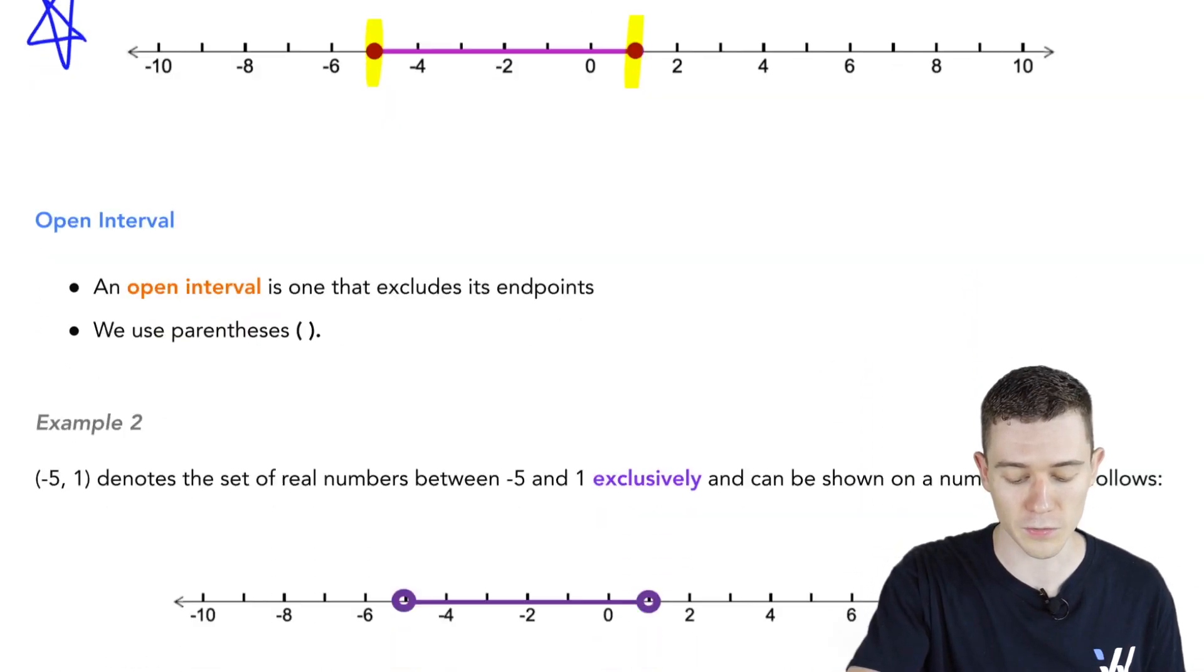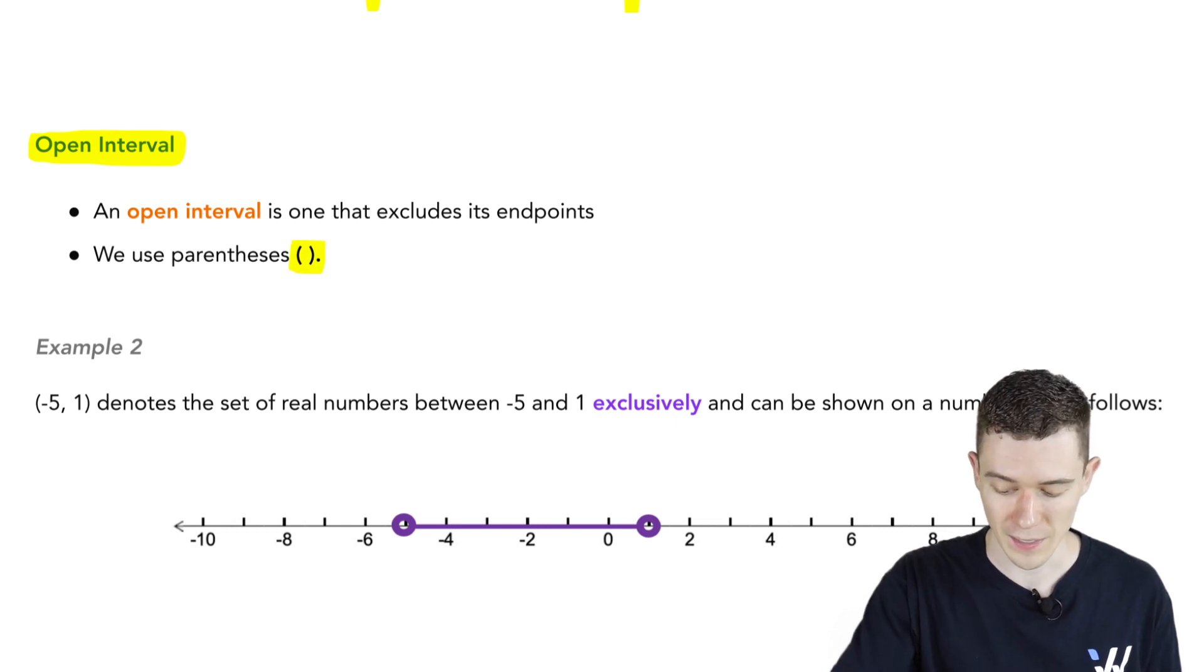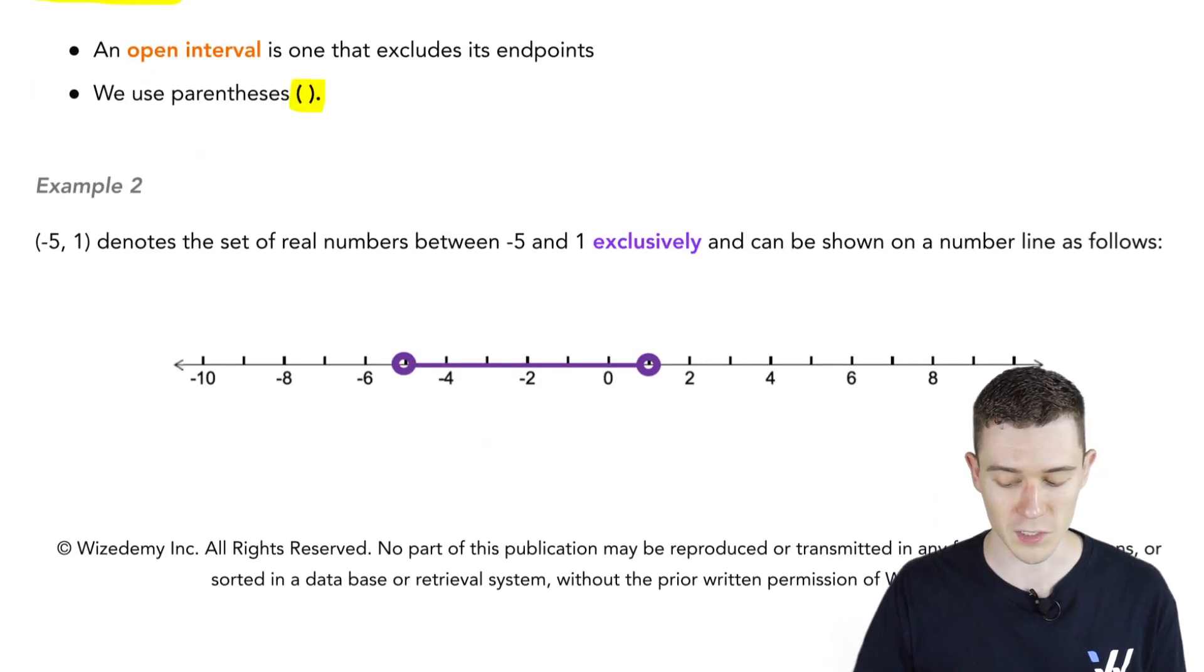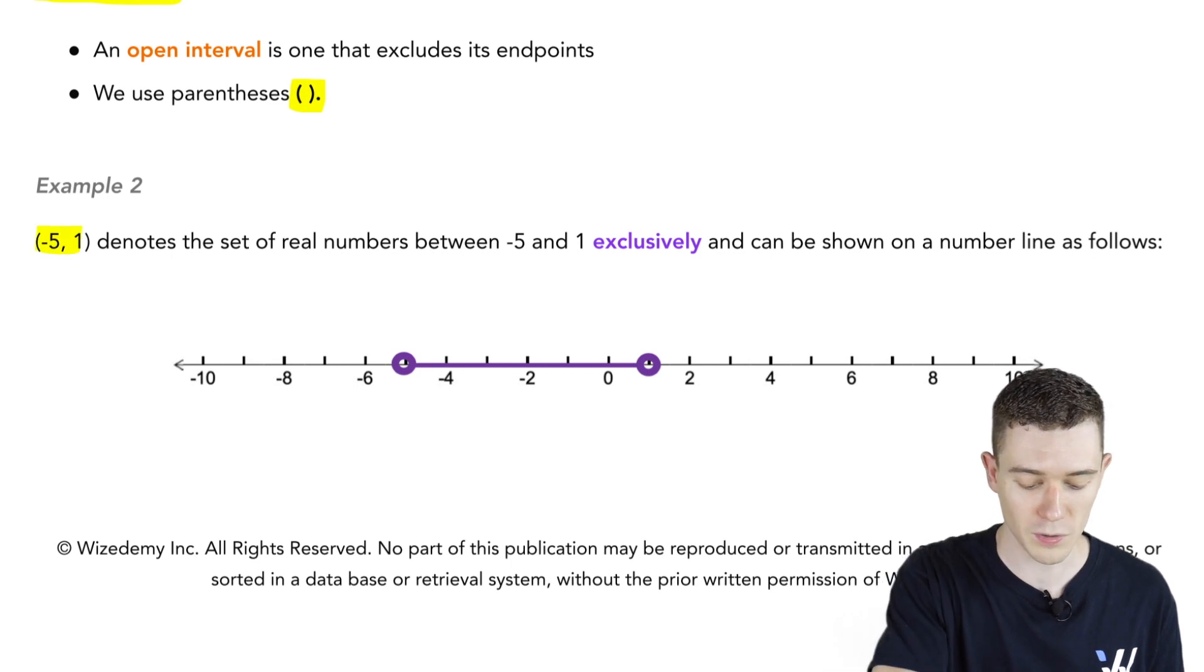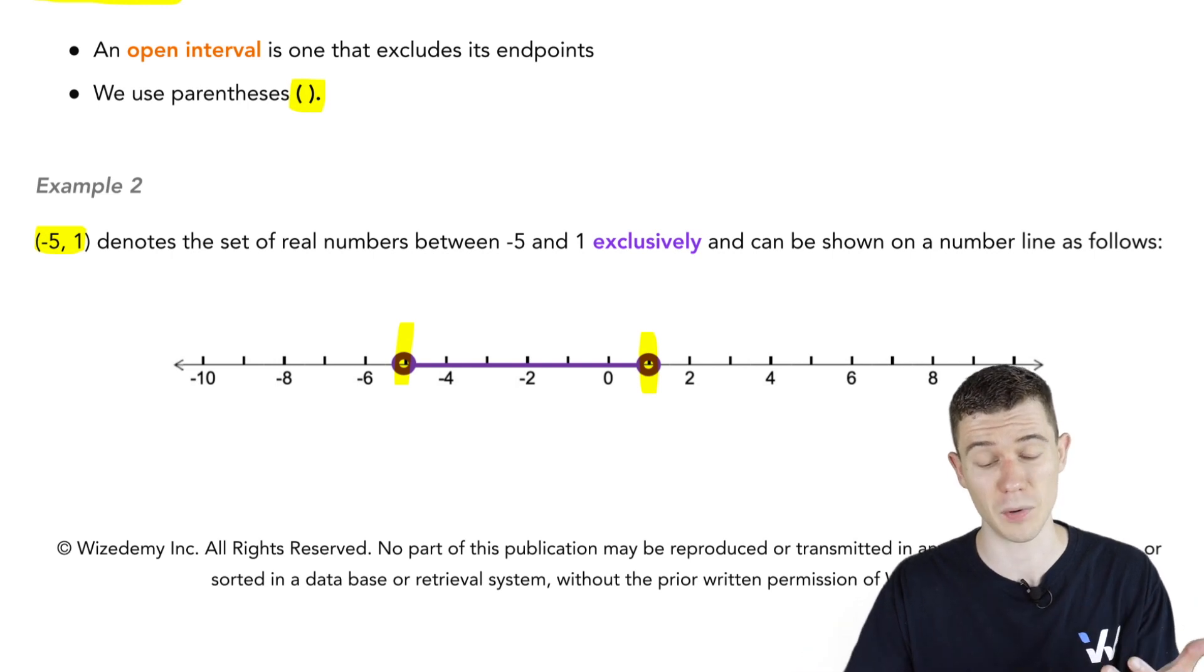Open intervals are very similar, but we're not including the endpoints. When we're doing open intervals, we surround them with parentheses. Here's the same interval minus 5 to 1, but you'll notice in our picture, there are open circles, meaning we're excluding those endpoints.